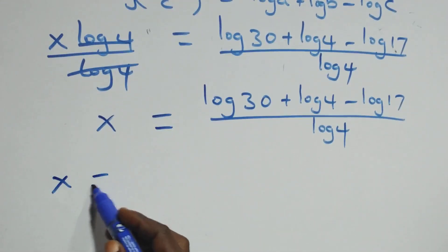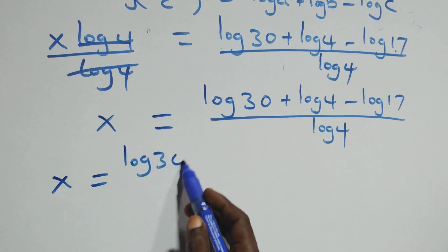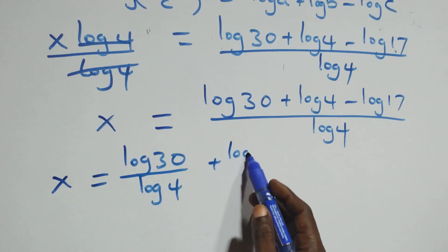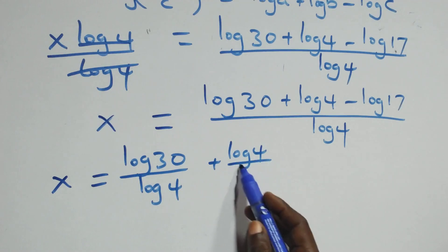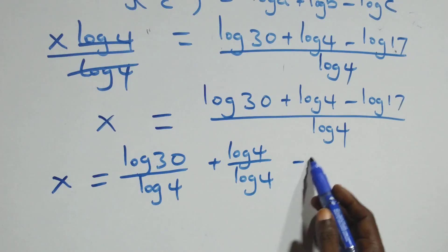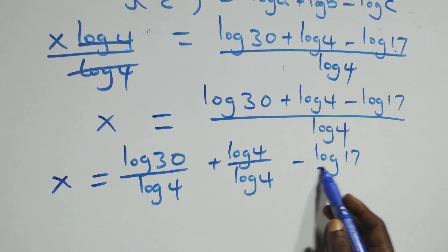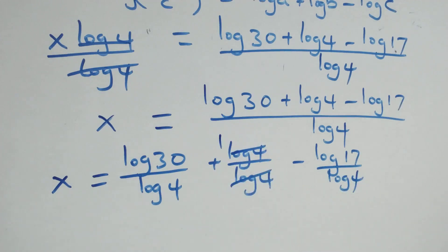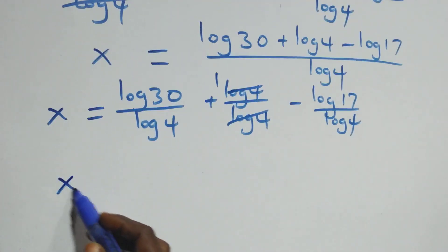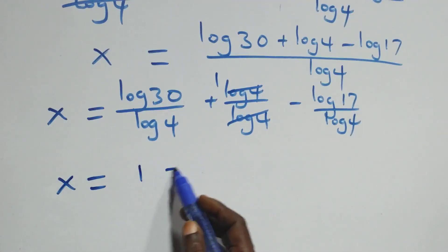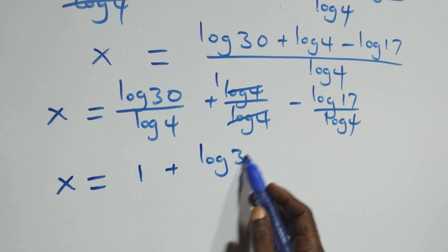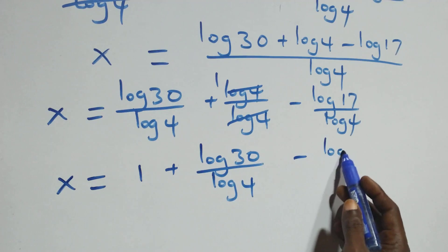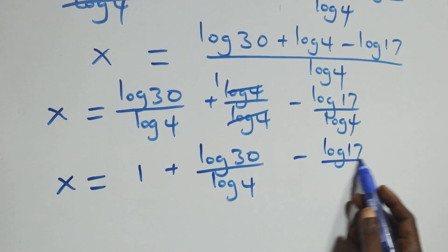When we separate this into three fractions, we have x equals log 30 over log 4, plus log 4 over log 4, minus log 17 over log 4. Since log 4 / log 4 = 1, we have x equals 1 plus log 30 over log 4 minus log 17 over log 4.